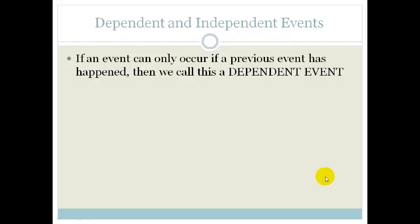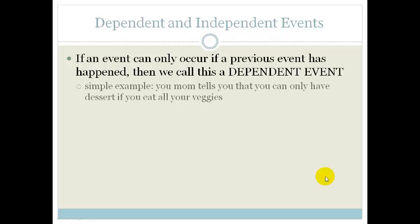If an event can only occur if a previous event has happened, then we call it a dependent event. For example, if your mom tells you you can only have dessert if you eat all your veggies, then that is a dependent event.